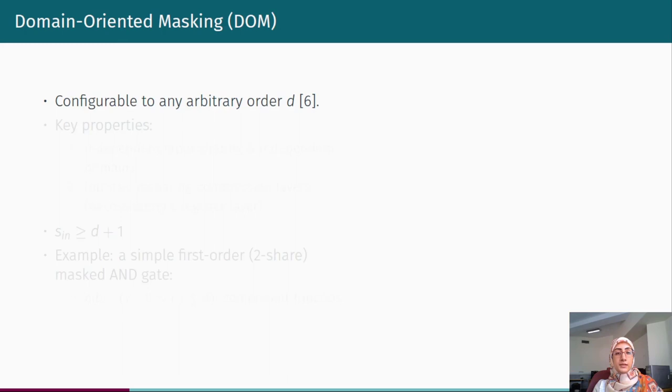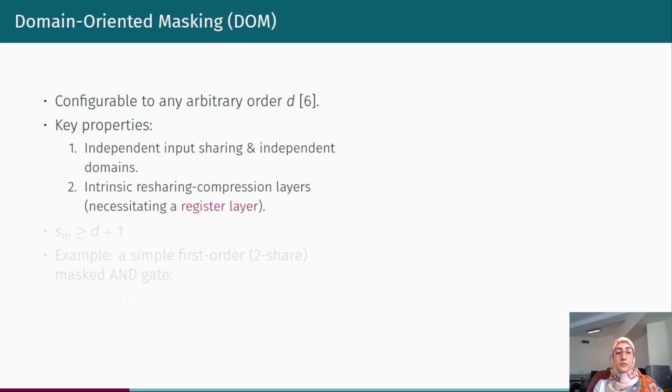Domain-oriented masking is the other well-known hardware masking scheme which is configurable to any arbitrary order. Input shares are divided into independent sets called domains, and this independence is maintained throughout the whole design. It includes a refreshing layer that adds fresh random bits to intermediate variables before compressing them to reduce the number of output shares.